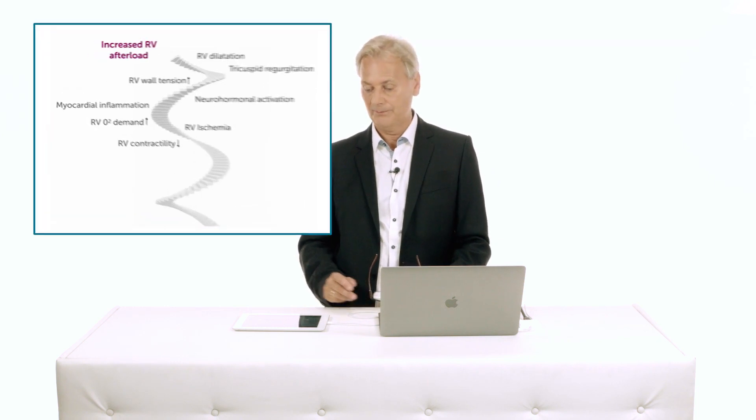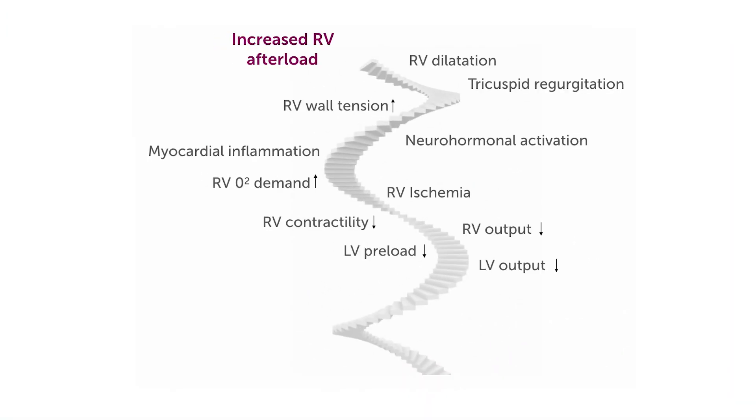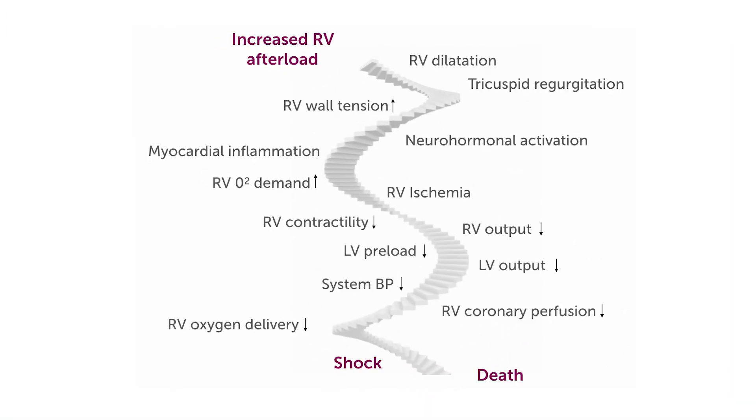the first problem we have is some form of obstruction of the vascular bed. This obviously changes the afterload of the right ventricle. So at the beginning of the cascade, we have an increase in right ventricle afterload.